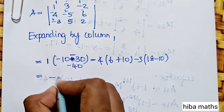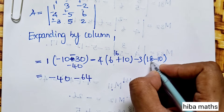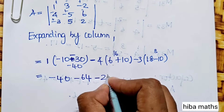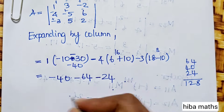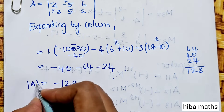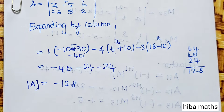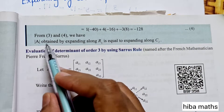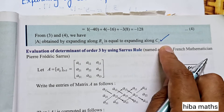The modulus of A obtained by expanding along row 1 equals the value obtained by expanding along column 1. This confirms that the determinant value remains unaltered regardless of which row or column we expand along. Thank you so much for watching.